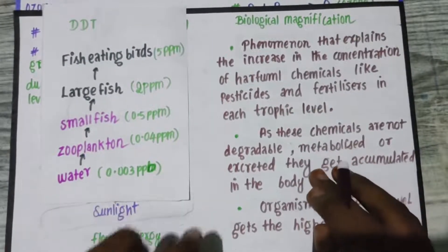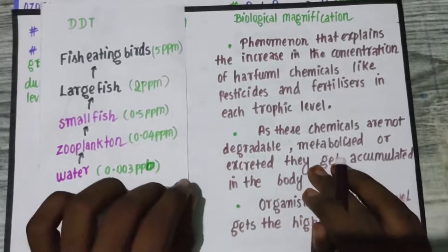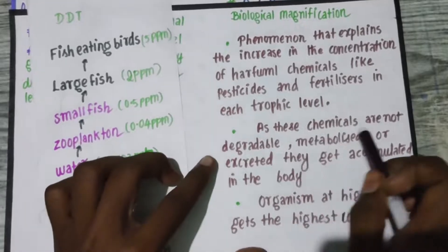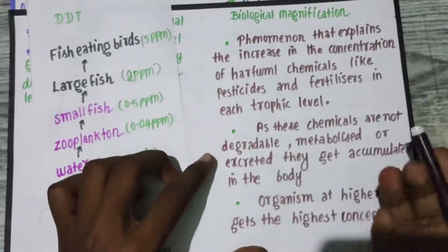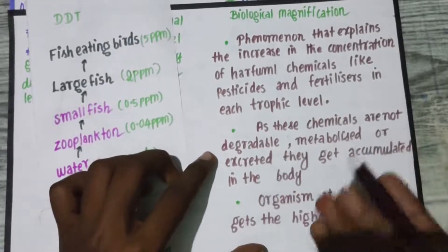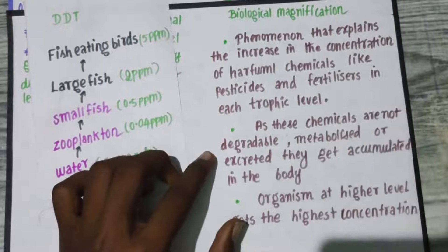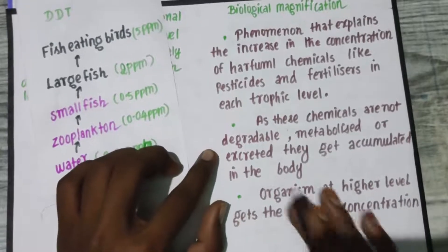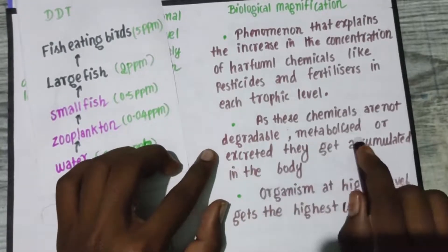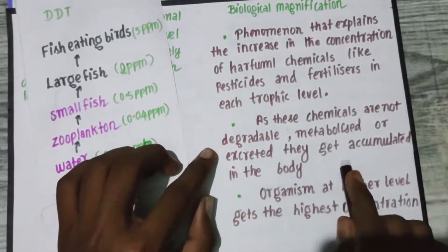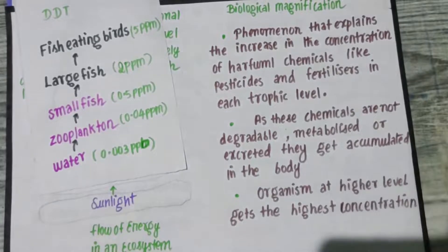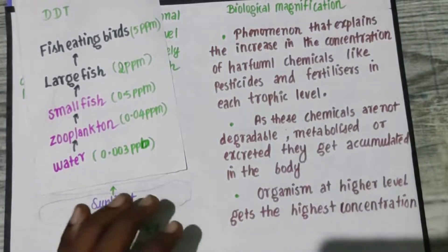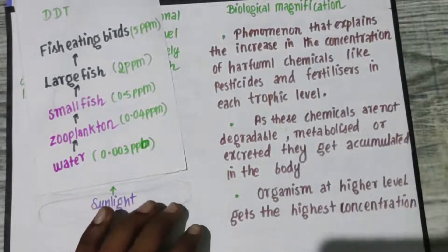Why is the chemical concentration higher at each level? Because the chemicals cannot be metabolized or excreted by the body. The body is unable to metabolize or excrete these chemicals, so they get accumulated.